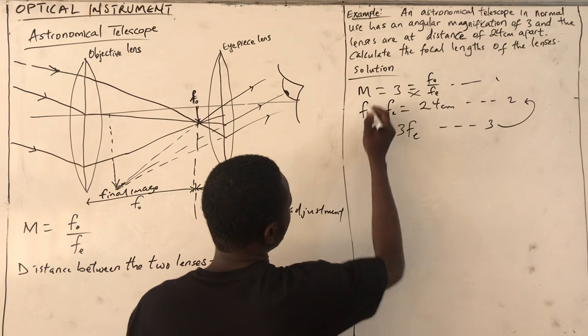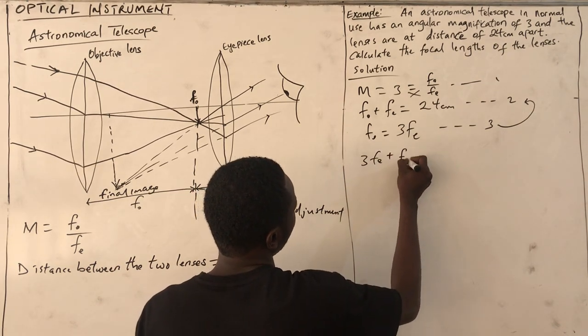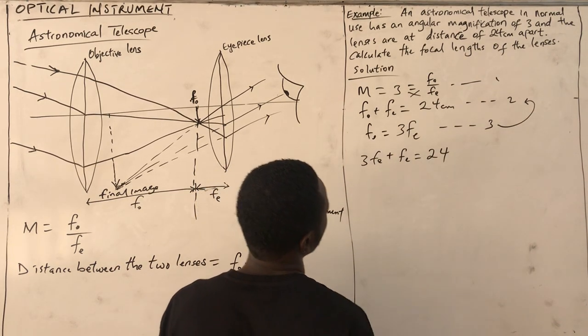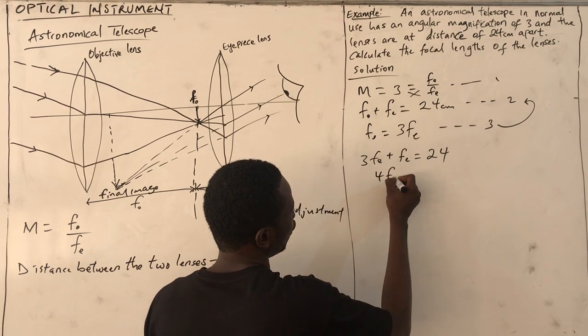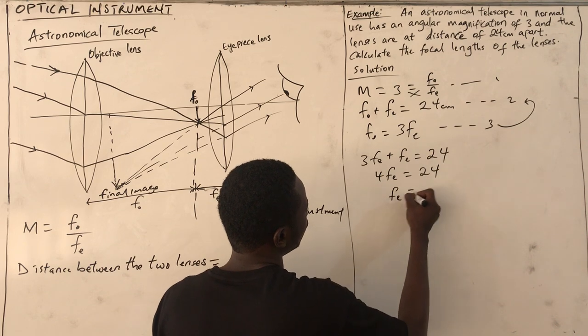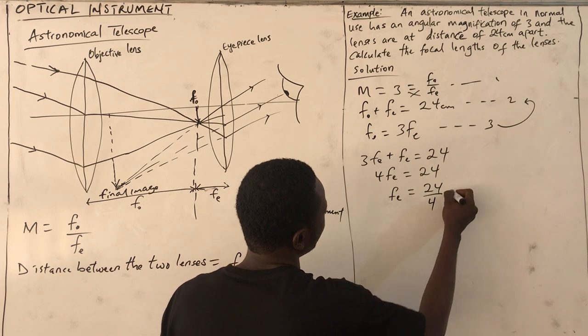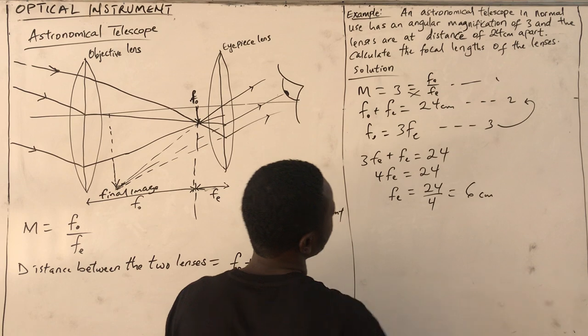So we have 3Fₑ + Fₑ = 24. Therefore, 4Fₑ = 24, which gives Fₑ = 6 cm.